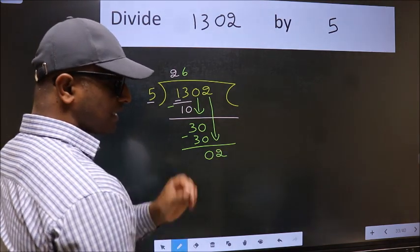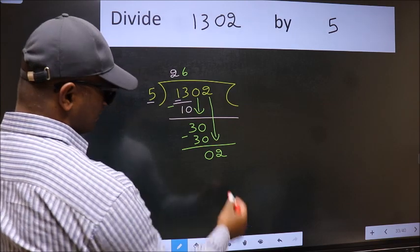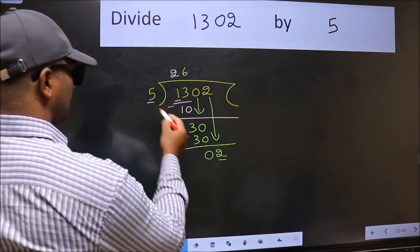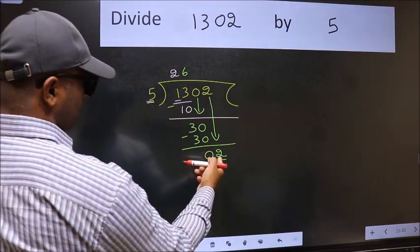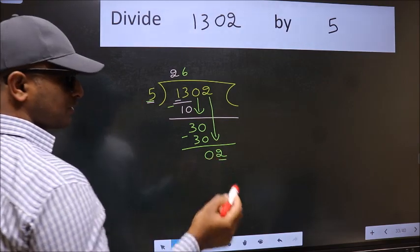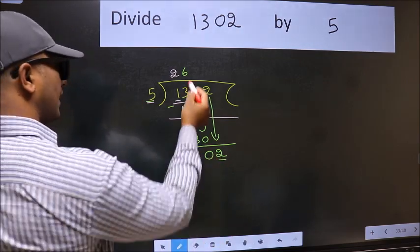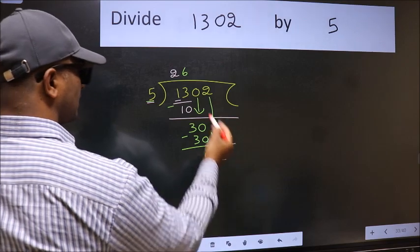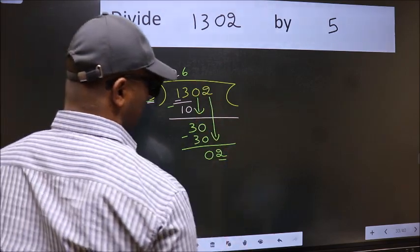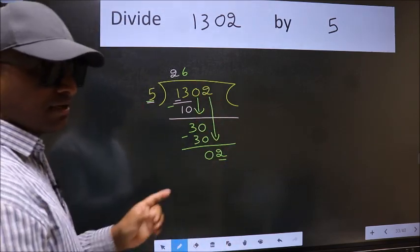The mistake happens and the mistake is this. Here we have 2 and here 5. 2 is smaller than 5. So what many do is they directly put dot, take 0, which is wrong. Why is it wrong?